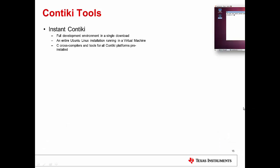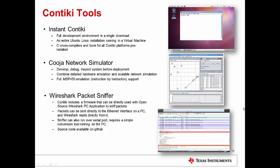Moving on to Contiki tools: you need to have Contiki for your open source examples, making, developing, and building your own end application for the respective toolchains and platforms. You also need the Cooja network simulator in case you don't want to work directly on hardware. The third and one of the most important tools is the Wireshark packet sniffer, which is used to monitor activity happening over the network and is very important from the compliance perspective — whether the communication is 6LoWPAN compliant or not.